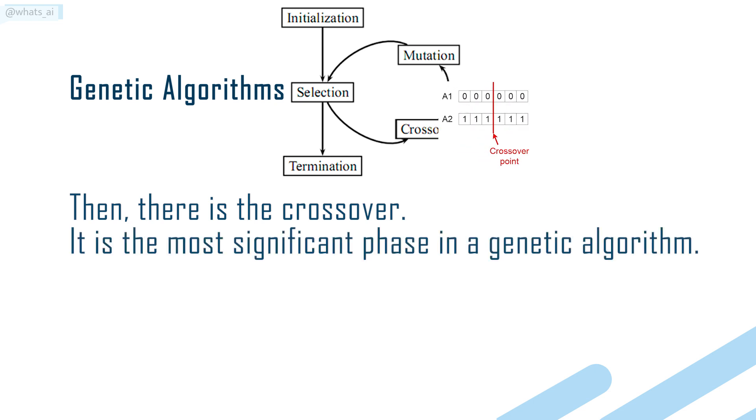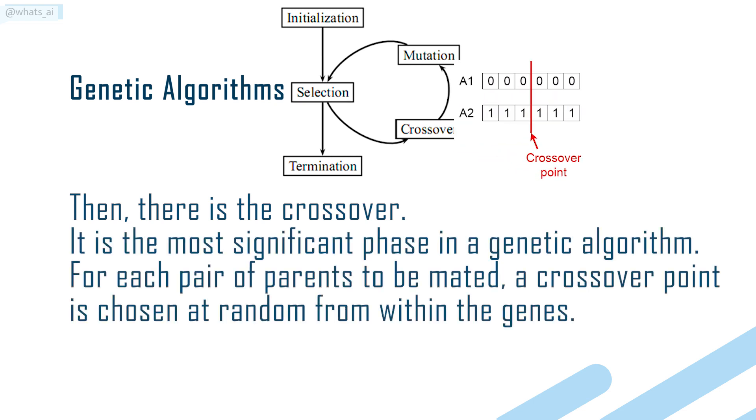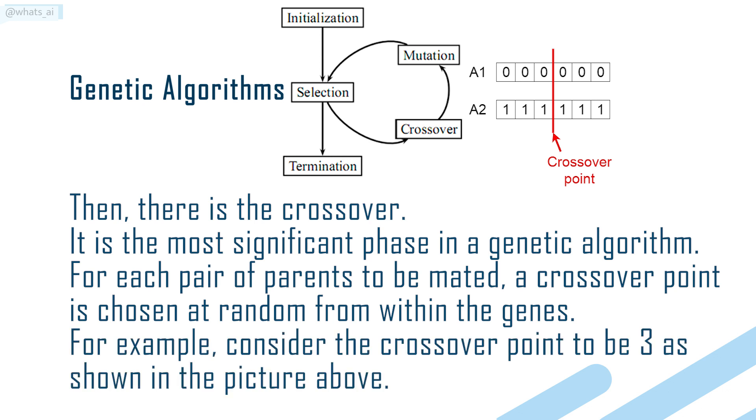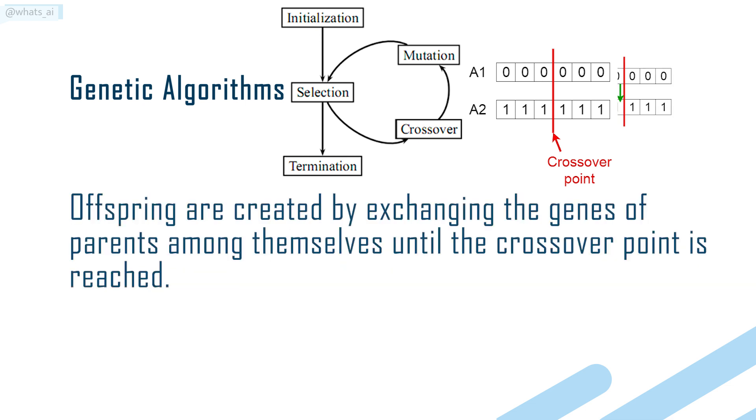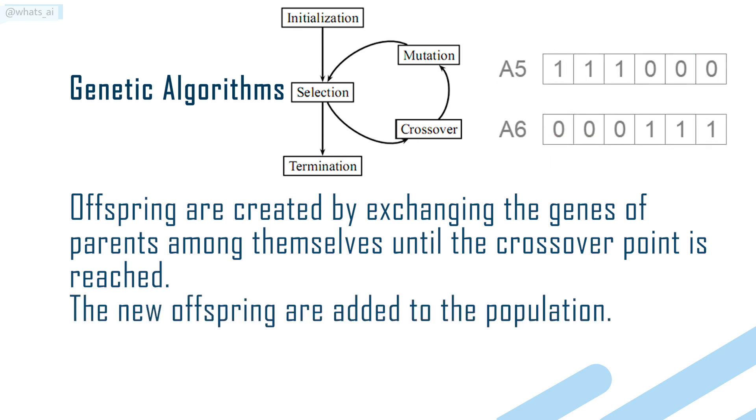Then there is the crossover. It is the most significant phase in a genetic algorithm. For each pair of parents to be mated, a crossover point is chosen at random from within the genes. Offspring are created by exchanging the genes of parents among themselves until the crossover point is reached. The new offspring are added to the population.